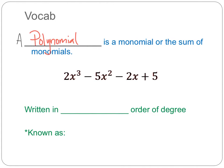Below here we have an example of a polynomial with four terms, and we separate each one individually. We call expressions like this a polynomial — rather than just calling it an expression, we call it a polynomial because we have all these terms added up together. And as we look at this polynomial, we'll notice that these are written in descending order.